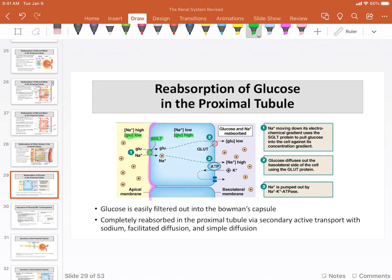Anytime we're moving something against its concentration gradient, we're going to be using active transport. So this is an active transporter. But you'll notice that ATP is not directly used, so that would make this secondary active transport.